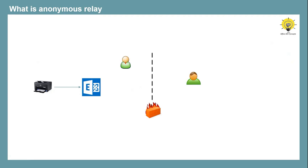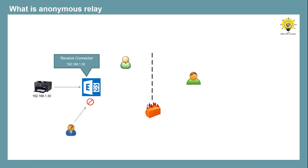You can send emails to internal or even external users from this application. Not only a printer application — you can even use a script that connects to your Exchange Server and sends emails to recipients. In Exchange Server, we create a receive connector and specify the IP address of the machine or application that is allowed to relay emails. This way, we allow only certain applications to send emails using your Exchange Server, and no one else will be able to connect to send spam or malicious emails.